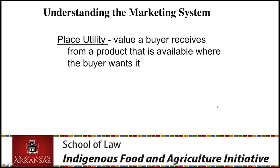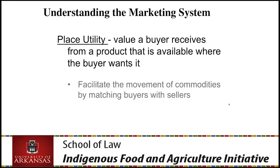Place utility is the value the buyer receives from a product that's available where the buyer wants it. A product that is distant from the area where it's consumed has a lower price. Transportation — moving the product from where it's produced to where it's consumed — is an example of the value of place utility. Very few people want to drive 100 miles to buy a bushel of apples, but they may want to drive five minutes to their market to buy five pounds of apples.